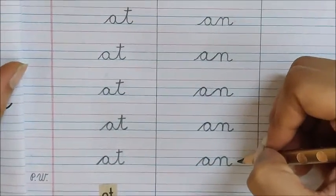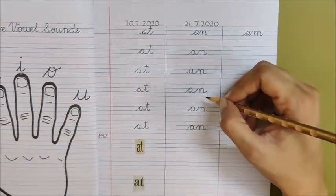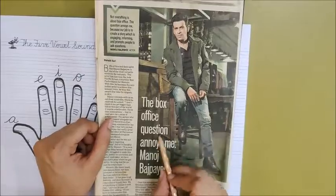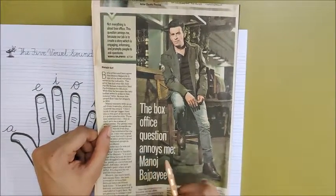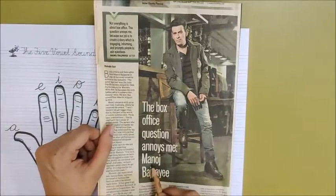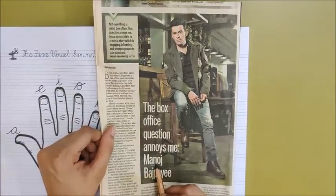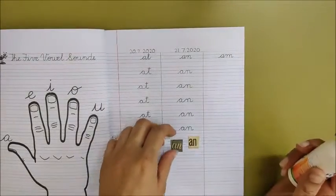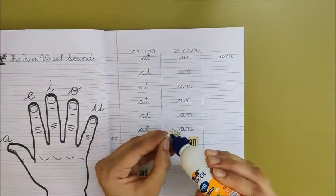Now after this children, you have to look for an in the newspaper. See, I have found an here. One an is here and another one is here. So look for an in the newspaper. Ask your mama or papa to cut for you. And then you have to put little bit of fevicol.